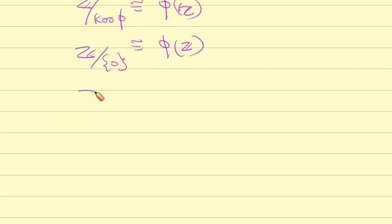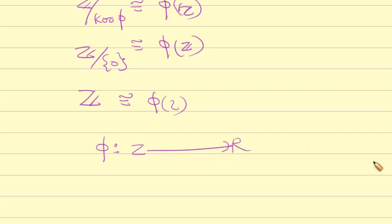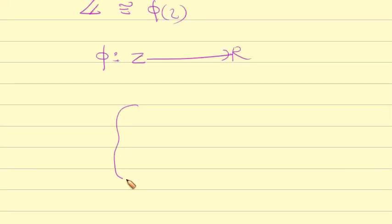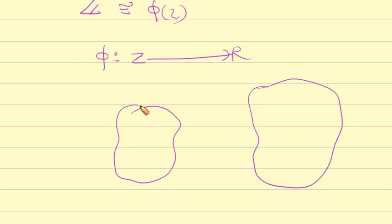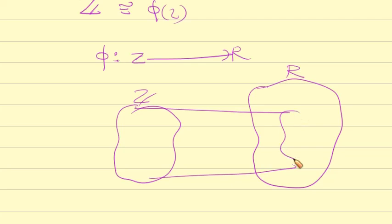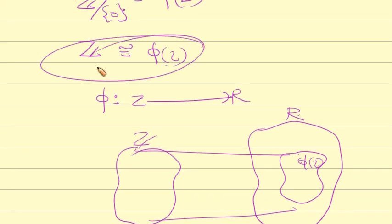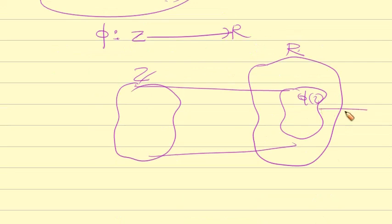Therefore Z by {0}, which is Z itself, is isomorphic to φ(Z). So φ(Z) is isomorphic to Z. Therefore R has a subring φ(Z) that is isomorphic to Z. This completes the proof.